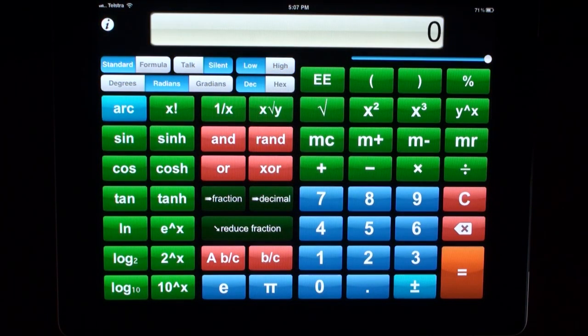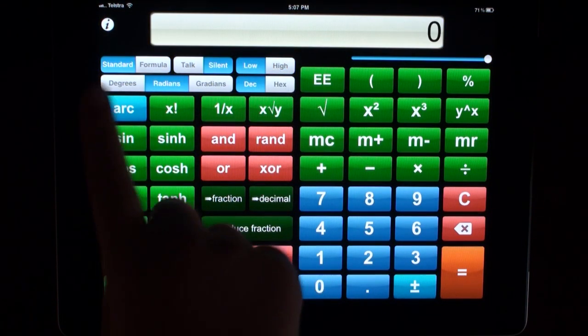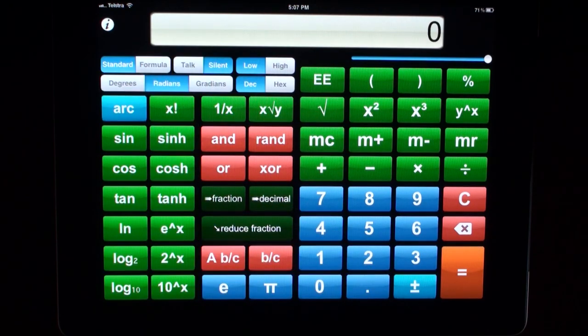This calculator has two entry modes, standard and formula. When your calculator is in standard mode, it will automatically perform your calculations as you press the operators. This is useful for adding up a lot of numbers together.